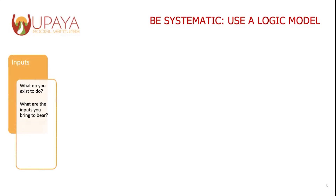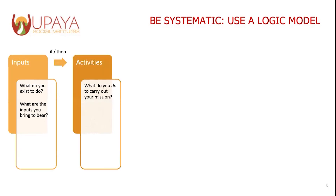With any logic model, you should start with the inputs. What do you have? Or how do you think about your mission? What is your reason for existence? With those inputs in hand, what will you actually do to carry out your mission? This is where you really list out the activities.